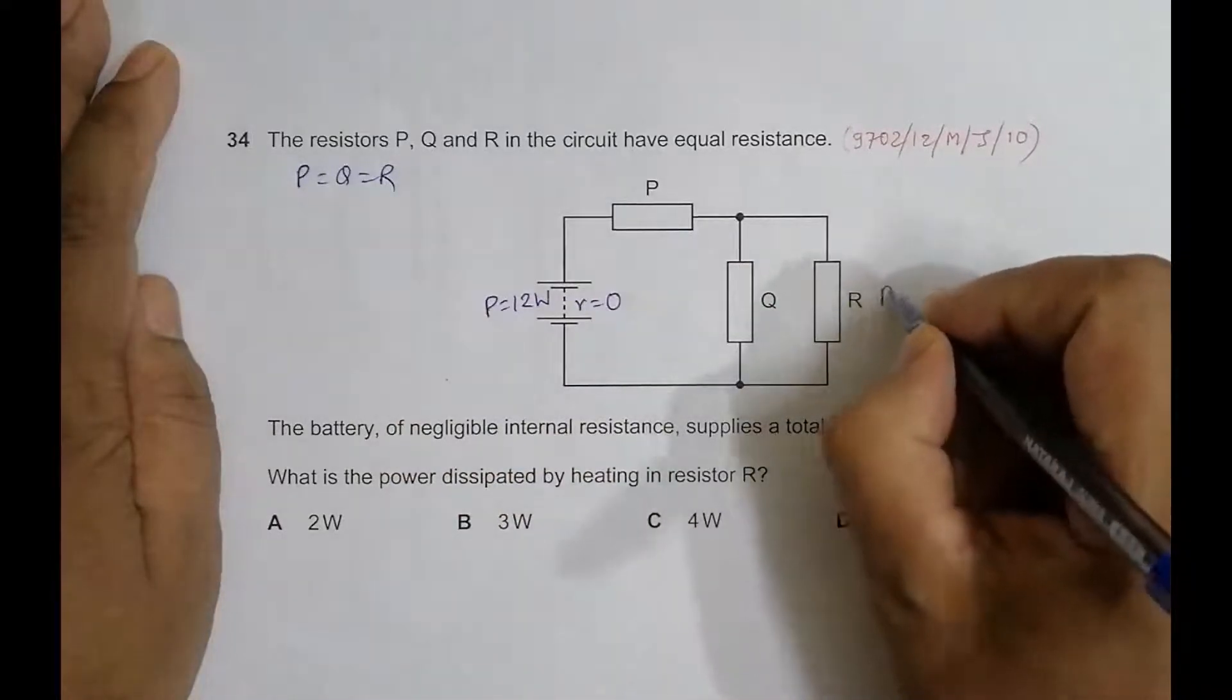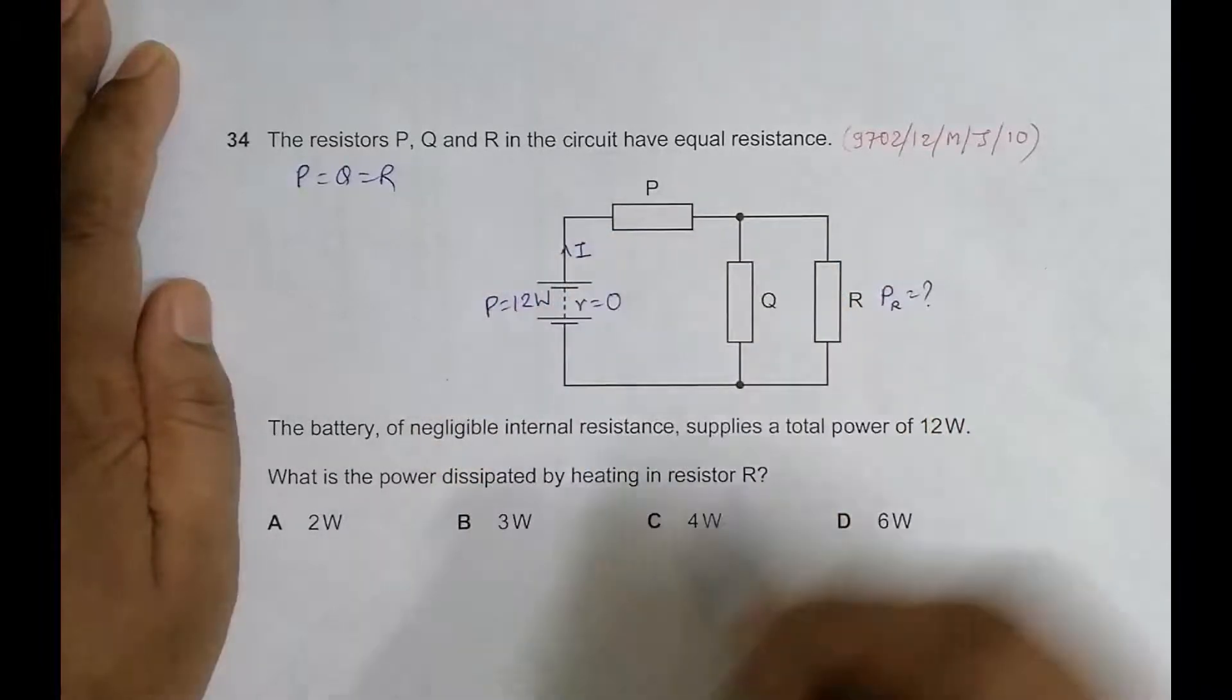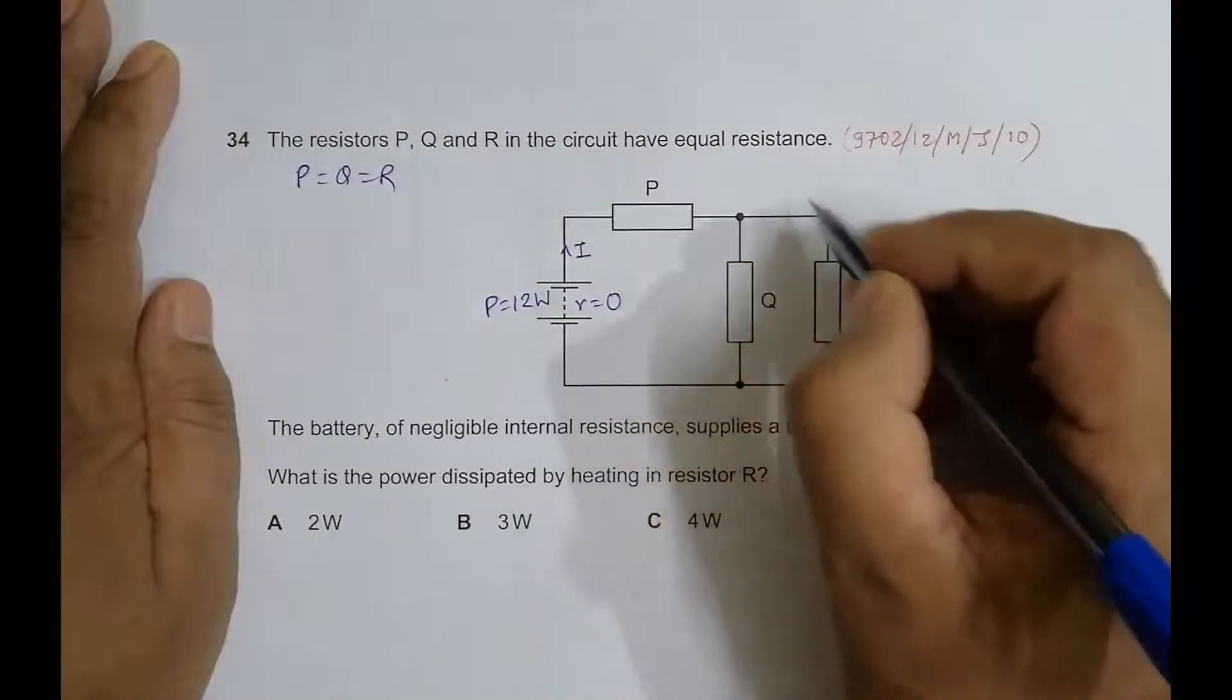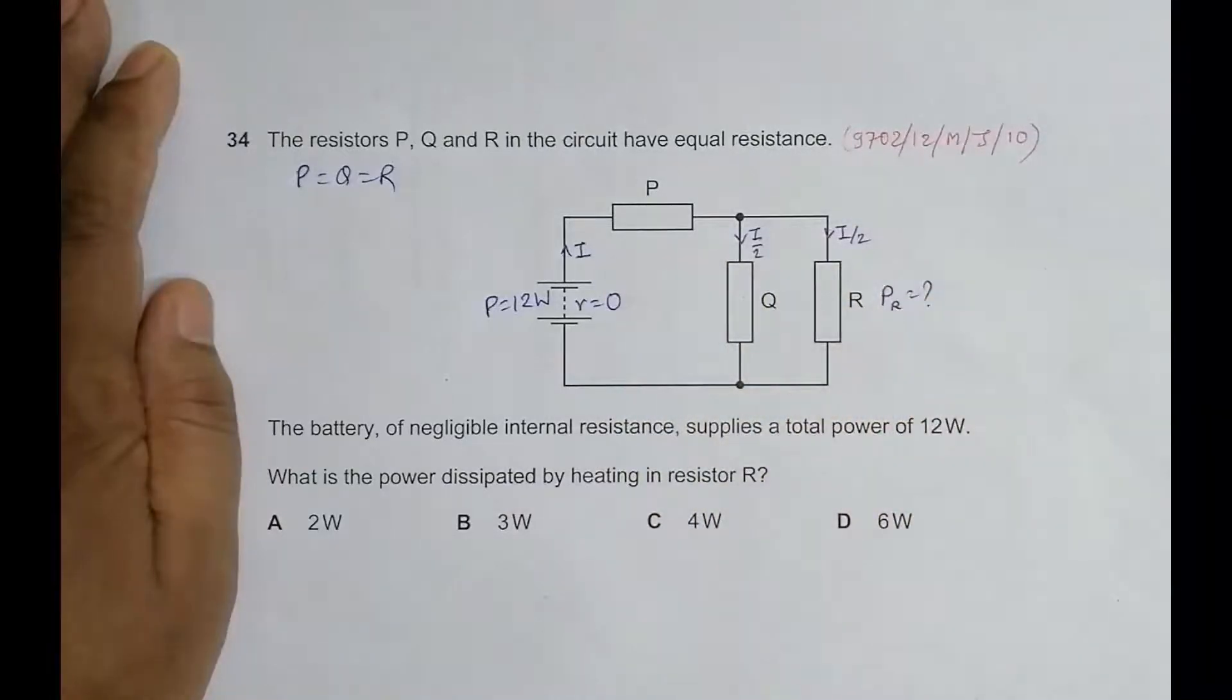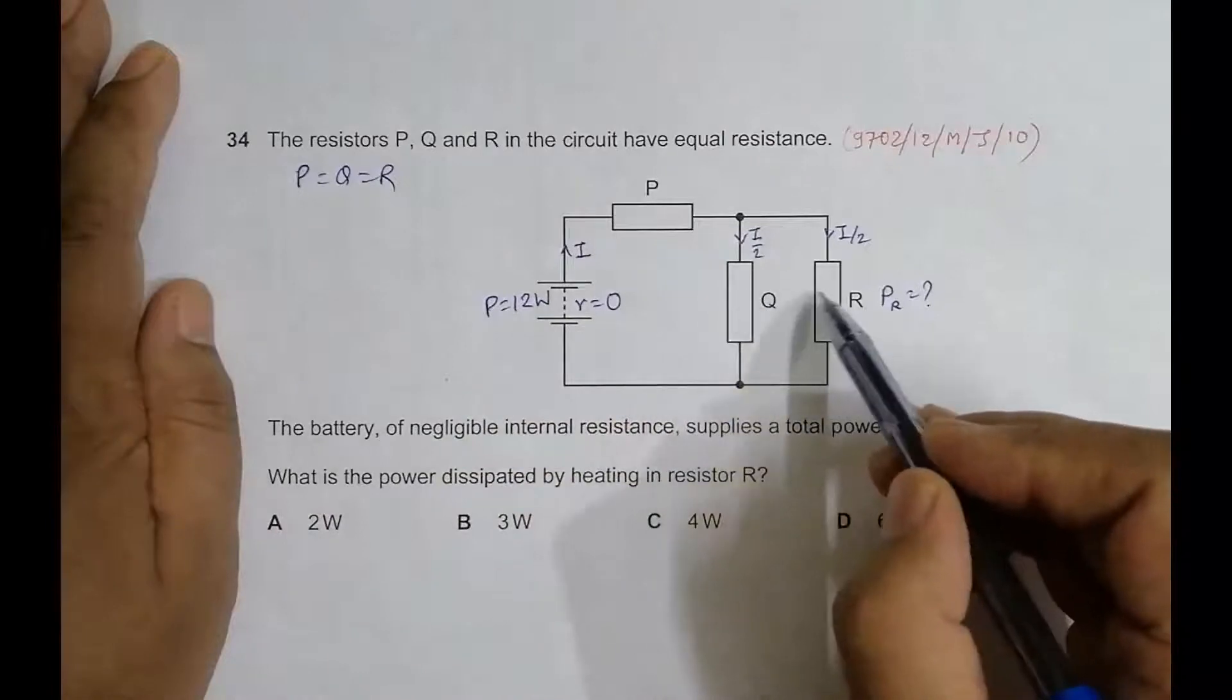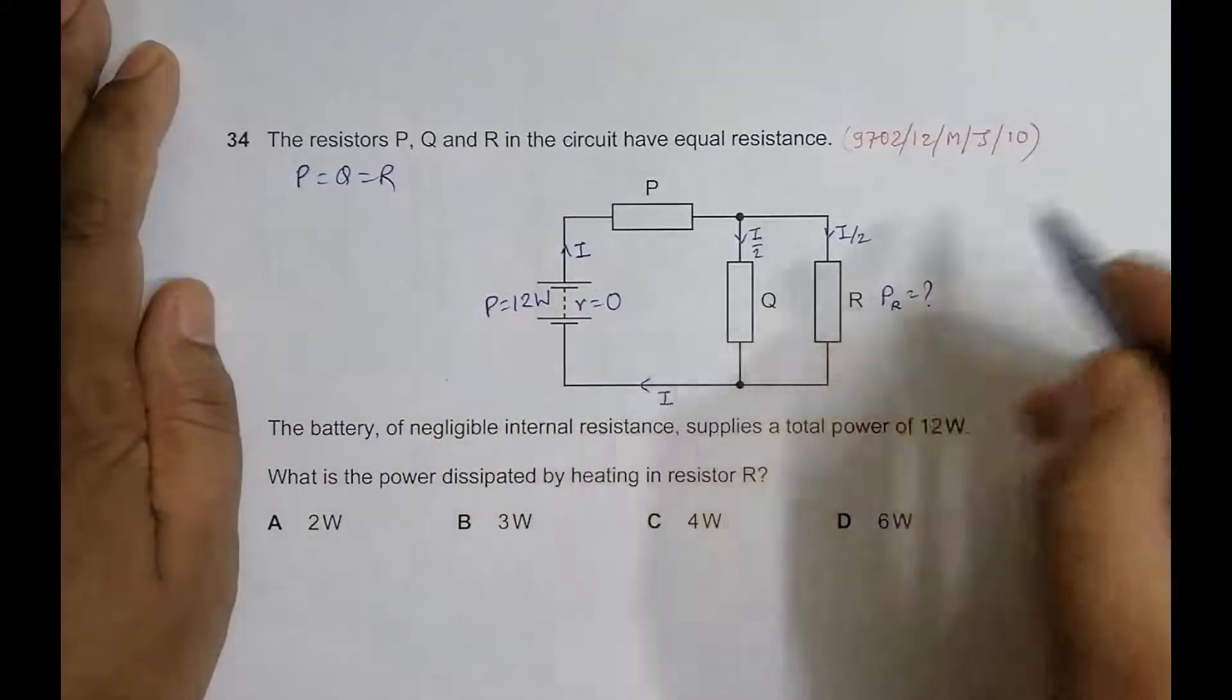So we have to find what is the power here. For that, let us first consider that the current here is I, and since they are equal resistors, the current will divide into equal parts. So it will be I/2 and it will also be I/2. Since we have done lots of problems, we can assume that if current comes here and if they are equal resistances, the current also should be half. So then here it will be then I.